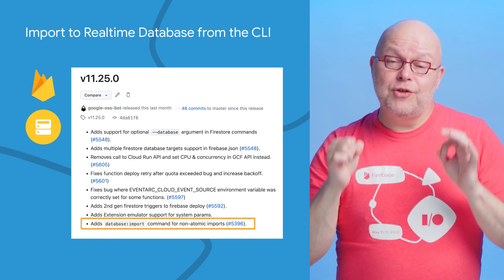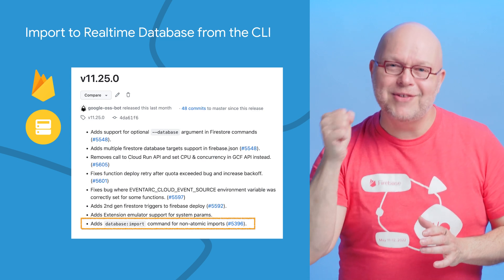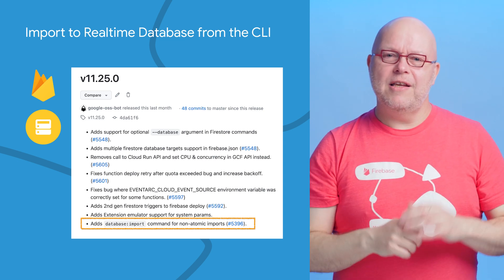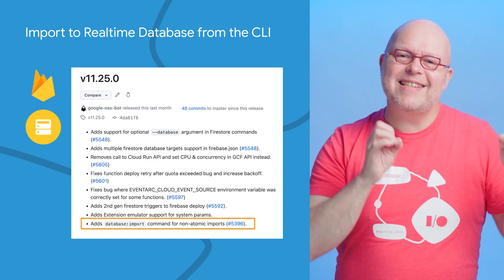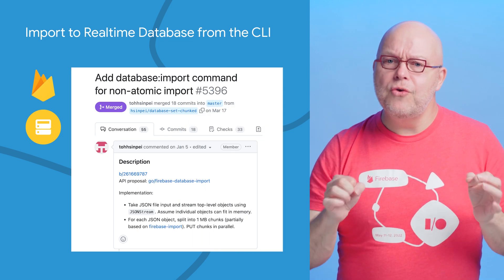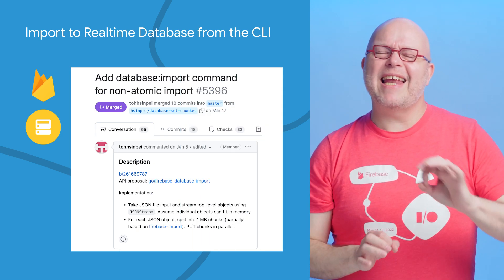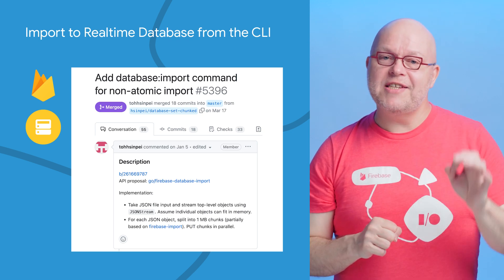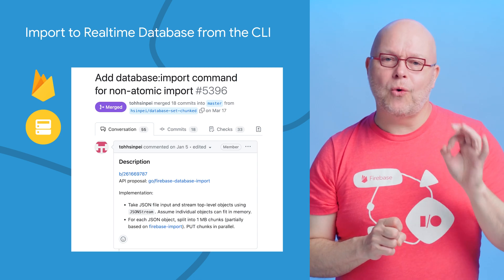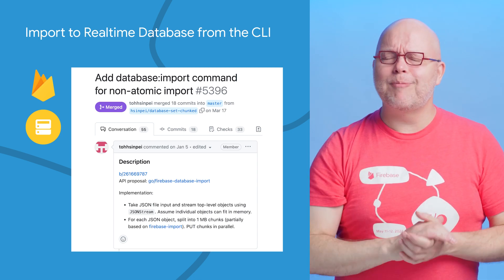We just added a new command to the Firebase CLI to make it easier to import large JSON files into your real-time database. This new 'database:import' command streams the data in from the JSON file that you specified, while at the same time writing it in chunks to the real-time database. It works similar to the long-existing Firebase import tool, but it can handle much larger files, allowing you to import JSON data that exceeds the available memory of your system and the maximum size of calls to the REST API. So try it out today with the link in the description.